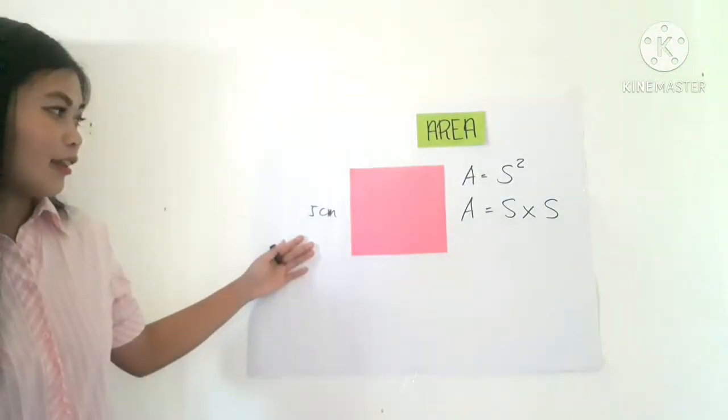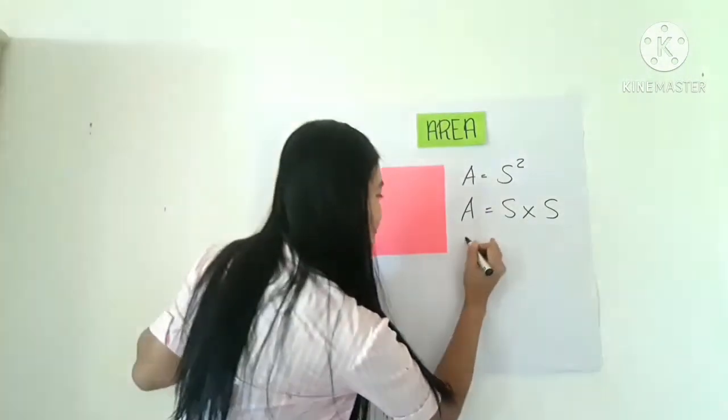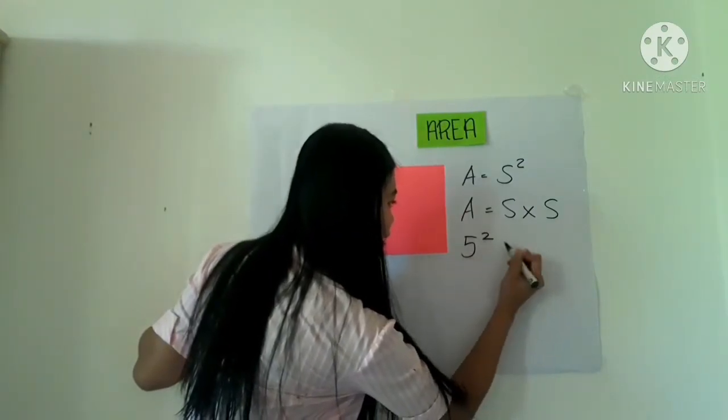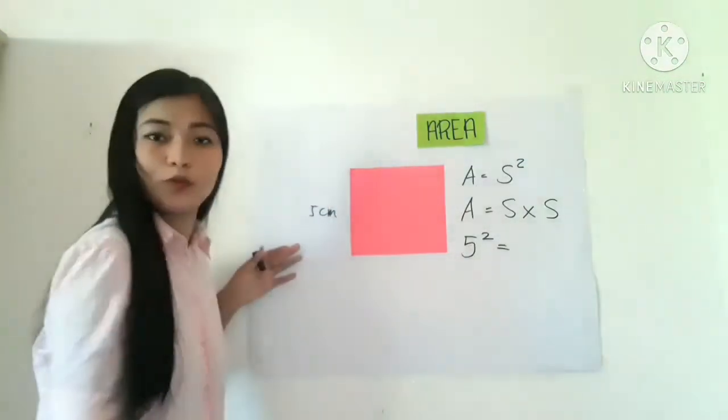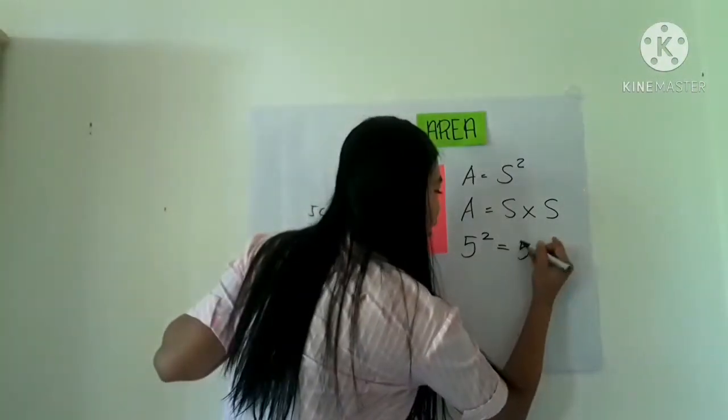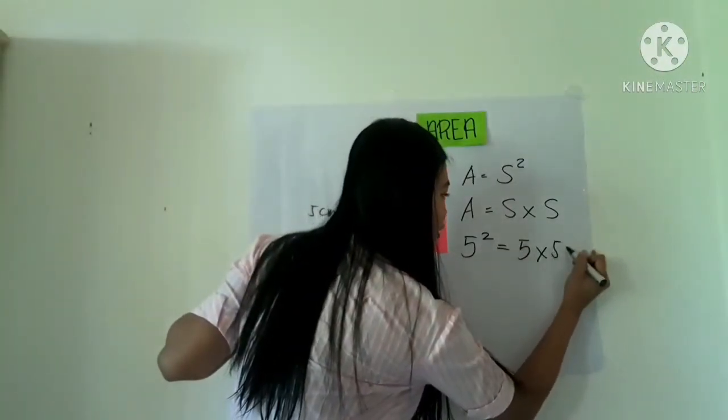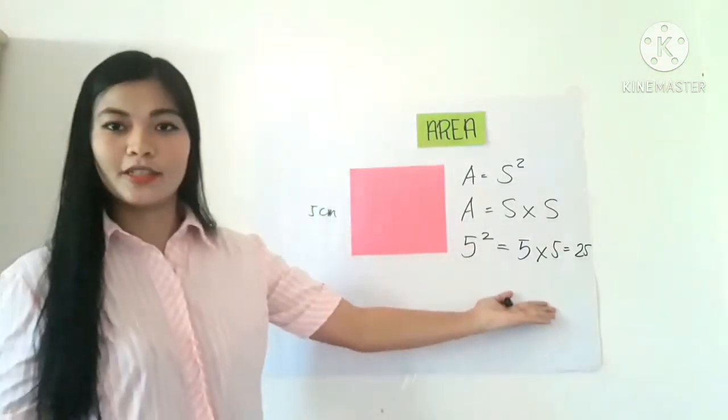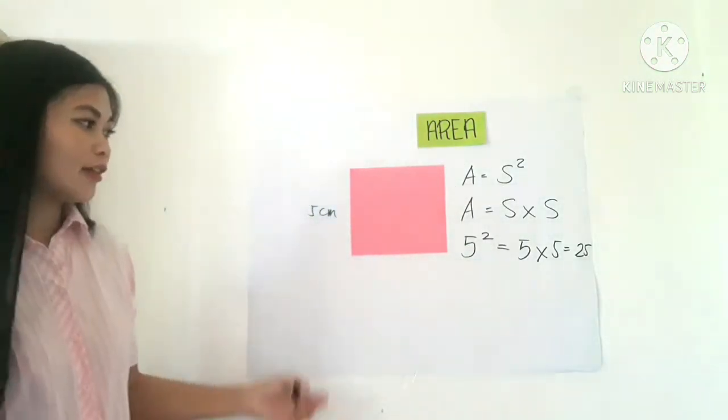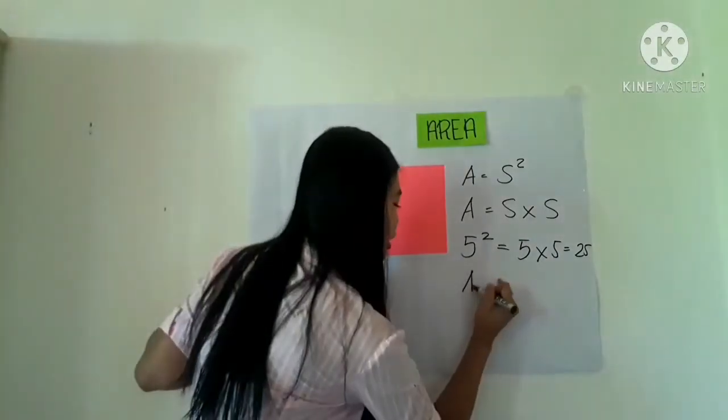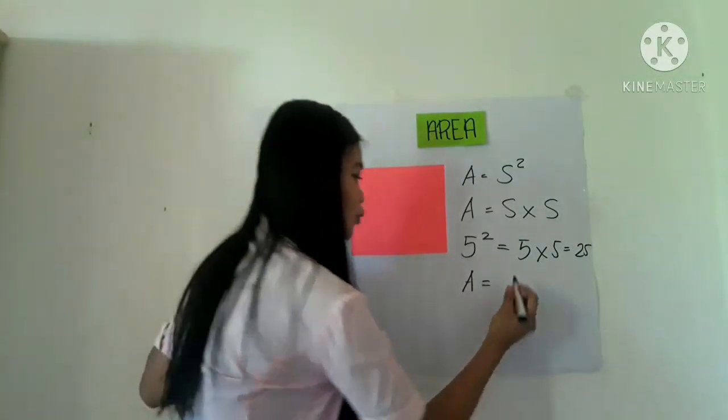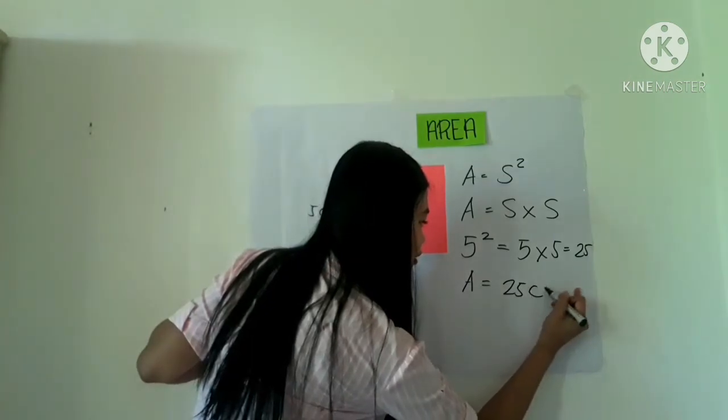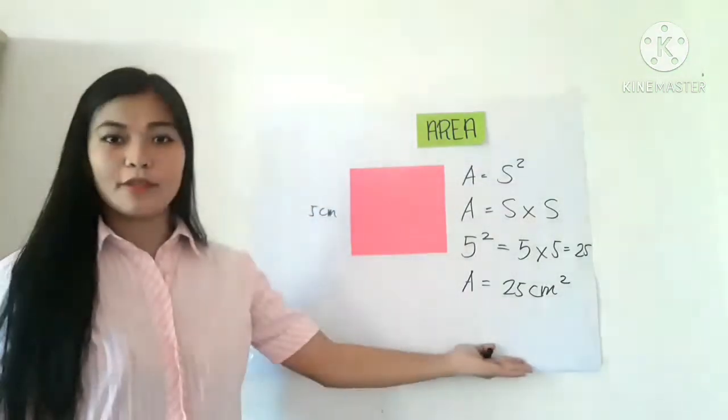And then, let us see. 5 squared is equal to 5 times 5, is equal to 25. That is, area is equal to 25 square cm.